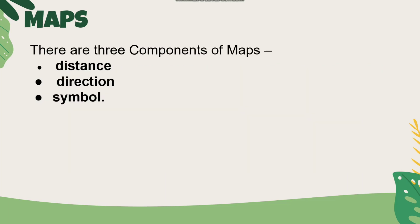There are three components of maps. There are three components: distance, direction, and symbol. This is important.